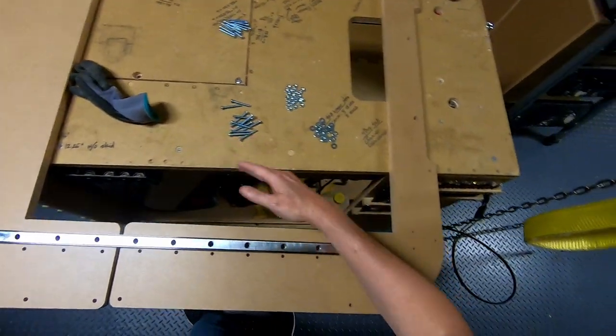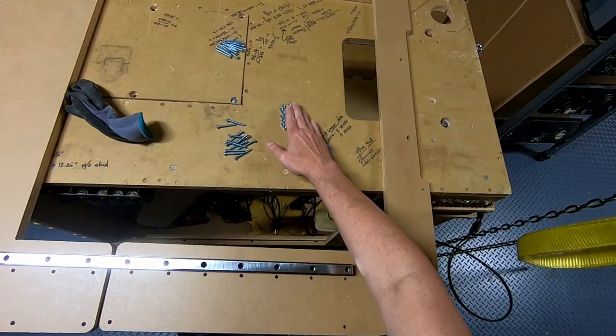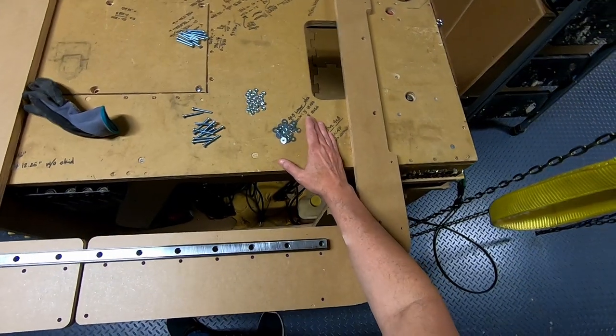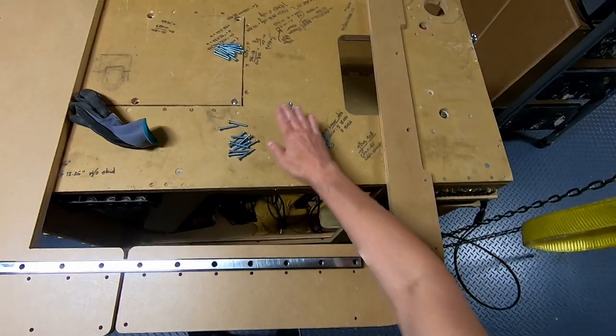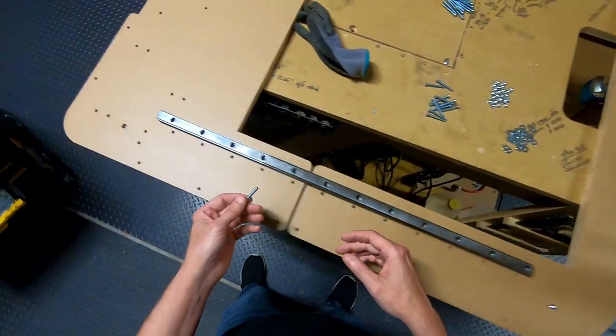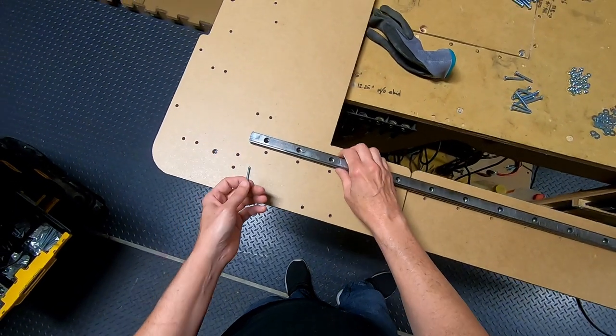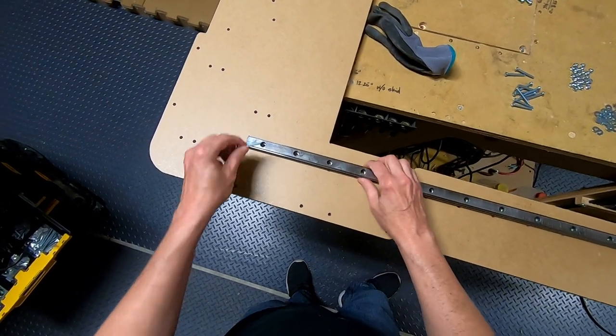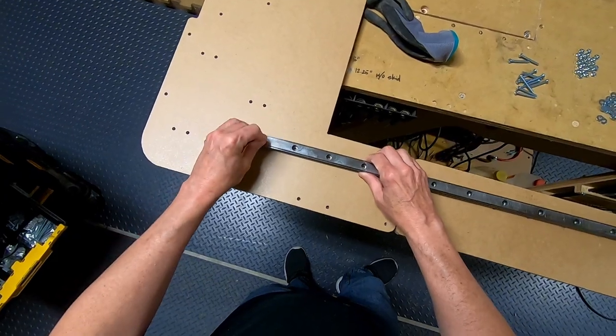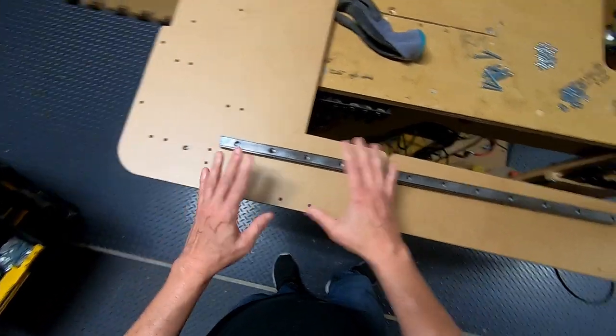You'll need mating nuts and washers for this as well. 24 washers and 24 nuts. Make sure to only fit them in and not tighten them all the way, because we're going to need to adjust it later on.